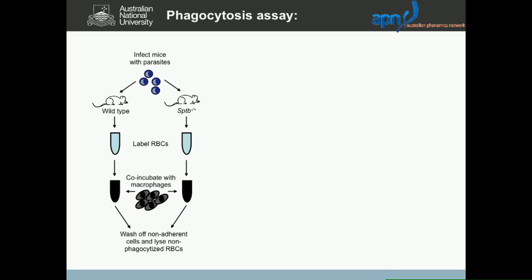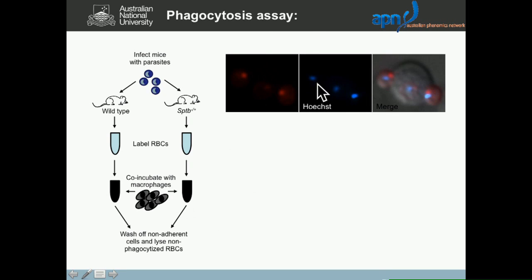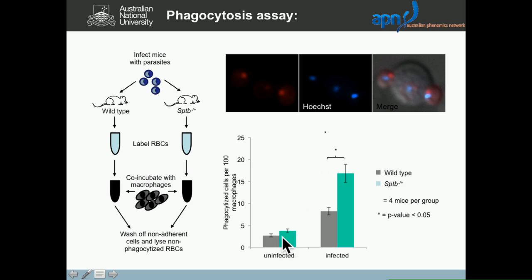The second experiment we did is to look at macrophages. We fluorescently labeled the red cells from wild type and mutant, co-incubated them with macrophages, and looked at the phagocytized and non-phagocytized macrophages. You have here a marker for the nucleus indicating presence of the parasite, a marker for the macrophage, and you can see the parasites that are phagocytized. What was very clear is that on infected red cells, mutant parasitized red cells are more likely to get cleared from phagocytosis.